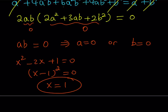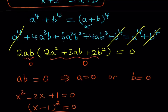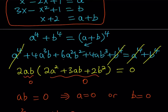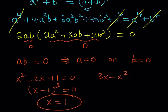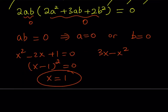If b = 0, then 3x - x² + 1 = 0. Negating both sides to keep x² positive, we get x² - 3x - 1 = 0.